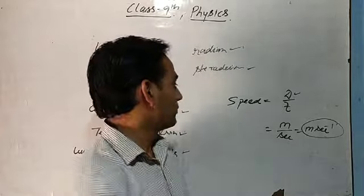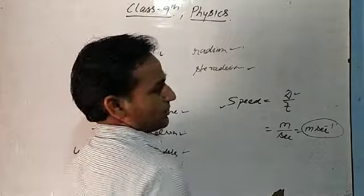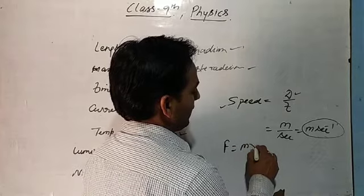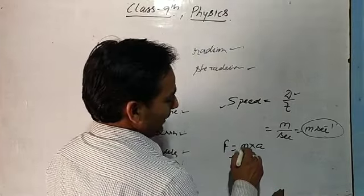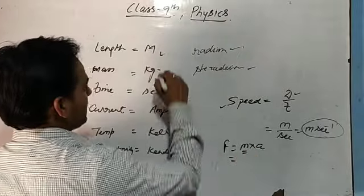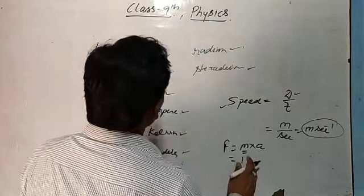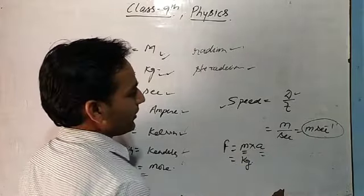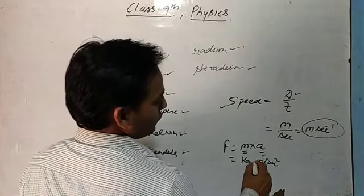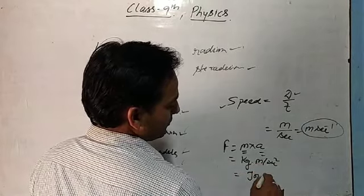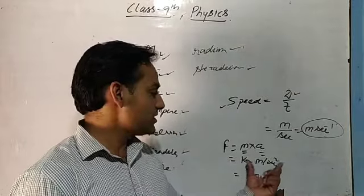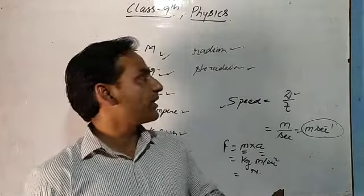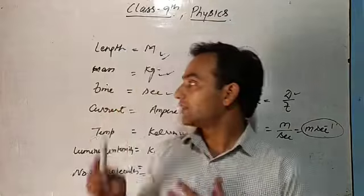Sub-units are made with the help of fundamental units. Whatever formula you know — speed, acceleration, distance, displacement, force — these all produce sub-units. For example, force F equals mass times acceleration. Mass is measured in kilogram, acceleration is meter per second squared, so force is kilogram meter per second squared, which is called Newton. So Newton is a sub-unit, not a fundamental unit.